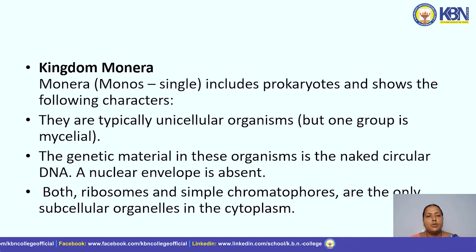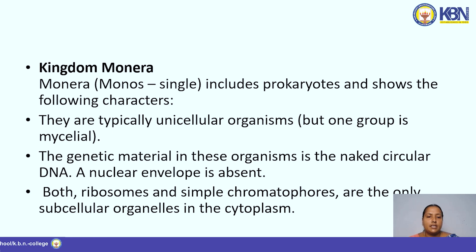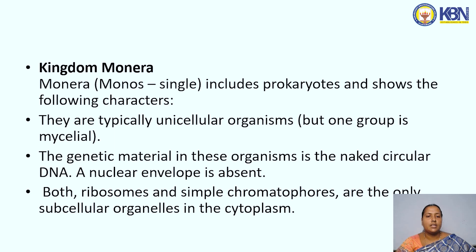Kingdom Monera: 'monos' means single. It includes prokaryotes and shows the following characters. They are typically unicellular organisms, but one group is mycelial. The genetic material in these organisms is naked circular DNA. A nuclear envelope is absent. Both ribosomes and simple chromatophores are the only subcellular organelles in the cytoplasm.